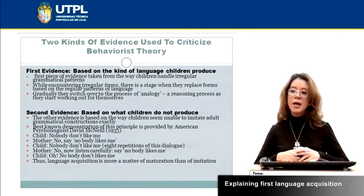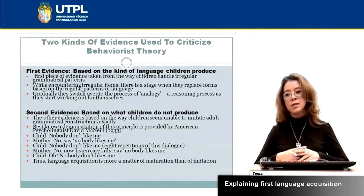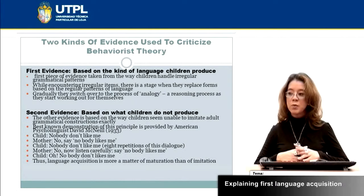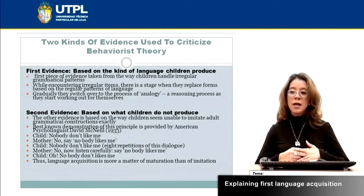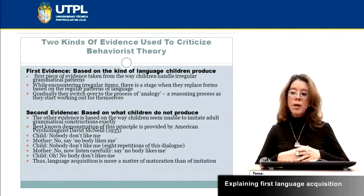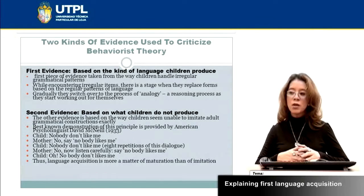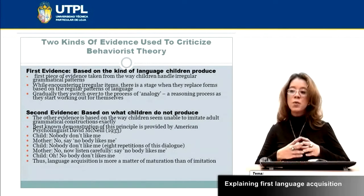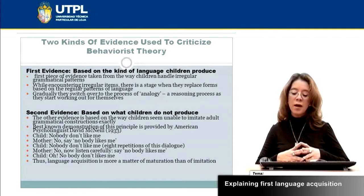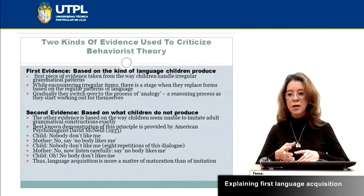The second piece of evidence criticizing this theory is that children seem unable to imitate grammatical constructions exactly. The best-known demonstration of this is provided by American psycholinguist David McNeill. Child: 'Nobody don't like me.' Mother: 'Don't say don't like me.' This is an example of when children use negation incorrectly, and the mother tries to teach correct usage through just repetition, exercises and drilling.